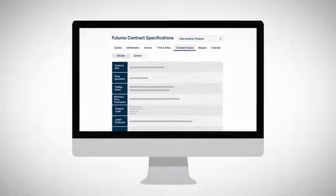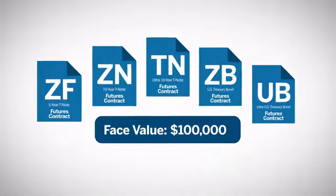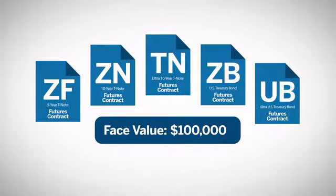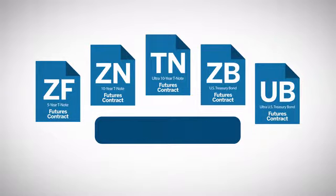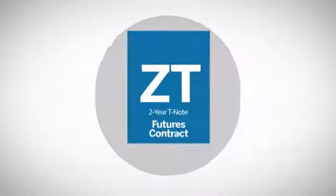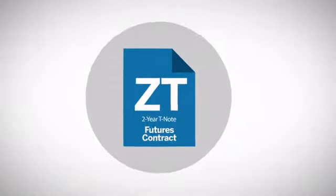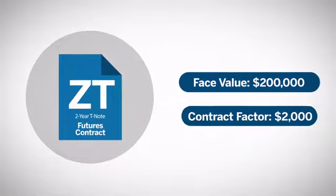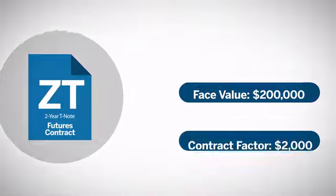Contract Value: All the Treasury futures have a face value of $100,000 per contract and a contract factor of $1,000 per contract, except the 2-year note, which has a face value of $200,000 and a contract factor of $2,000 per contract.